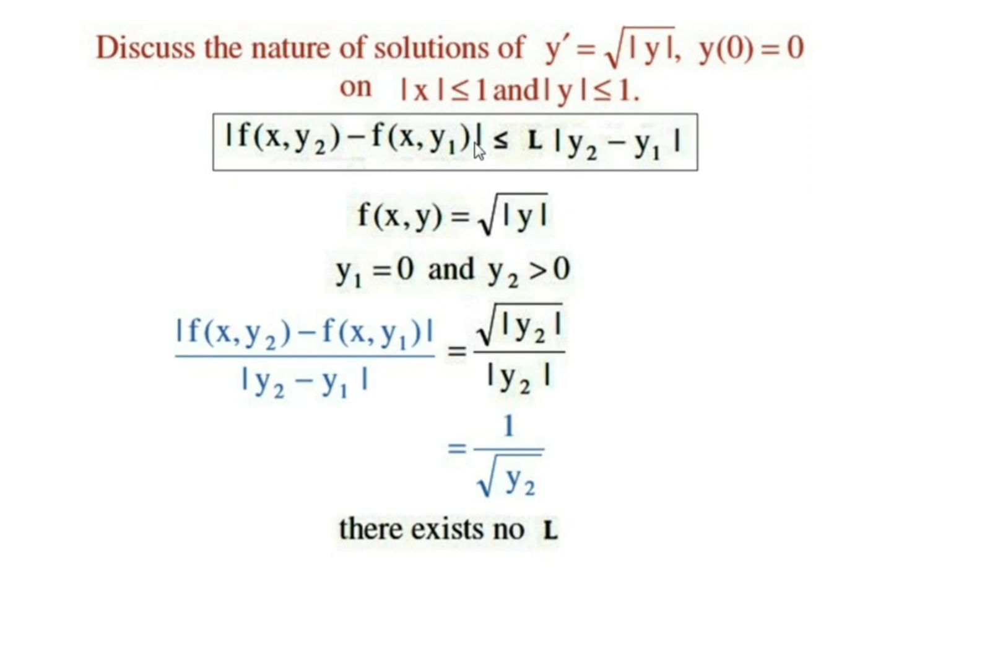In any region, that region containing y = 0. Our region is |y| ≤ 1, means y lies between -1 and +1. This region contains the point y = 0. Therefore, 1/√y₂ does not exist. So, the Lipschitz condition is not satisfied.